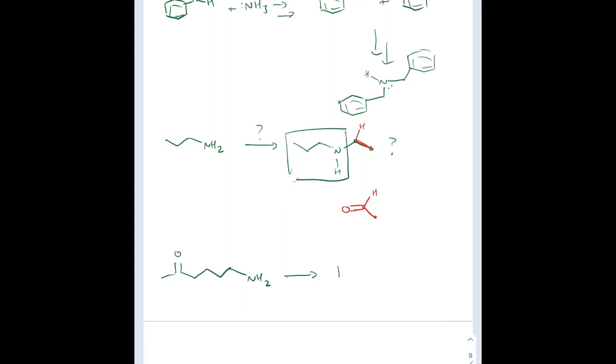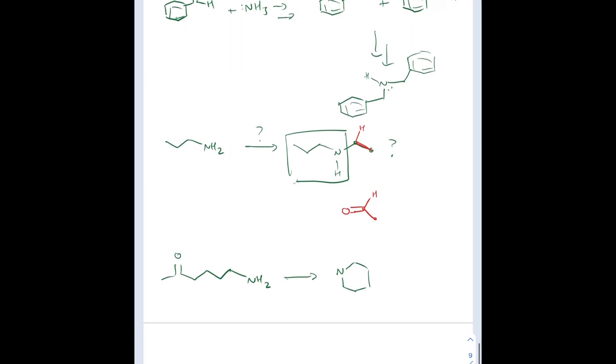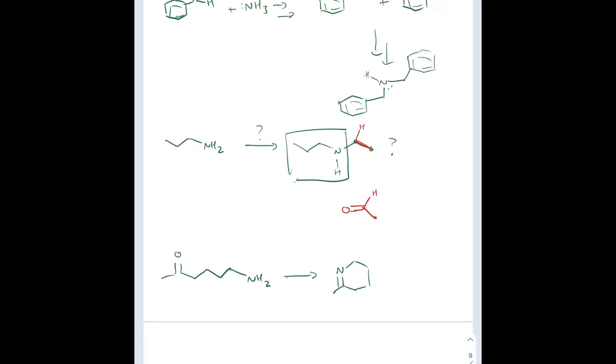Another one I want to point out: there's an amine and a carbonyl group in the same molecule, so why not do an intramolecular nucleophilic attack on the acyl group, form a cyclic imine, and then reduce that with lithium aluminum hydride to isolate our cyclic amine? Intramolecular reactions are always super fun as well.